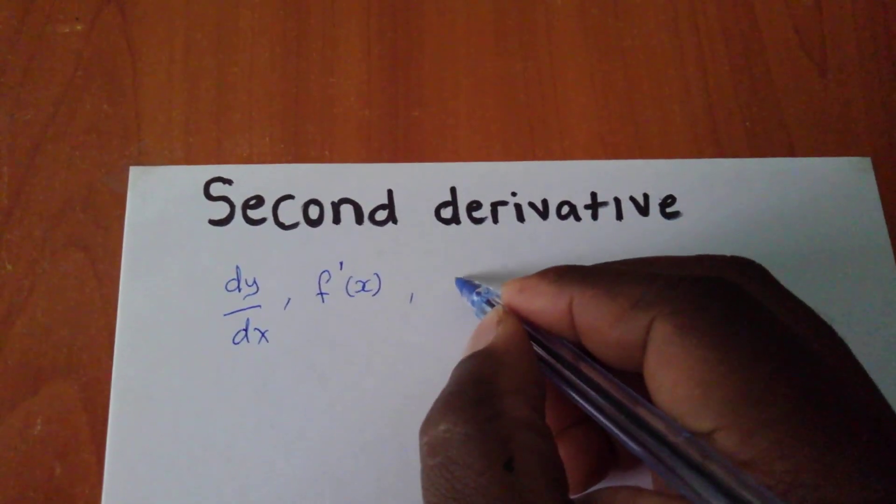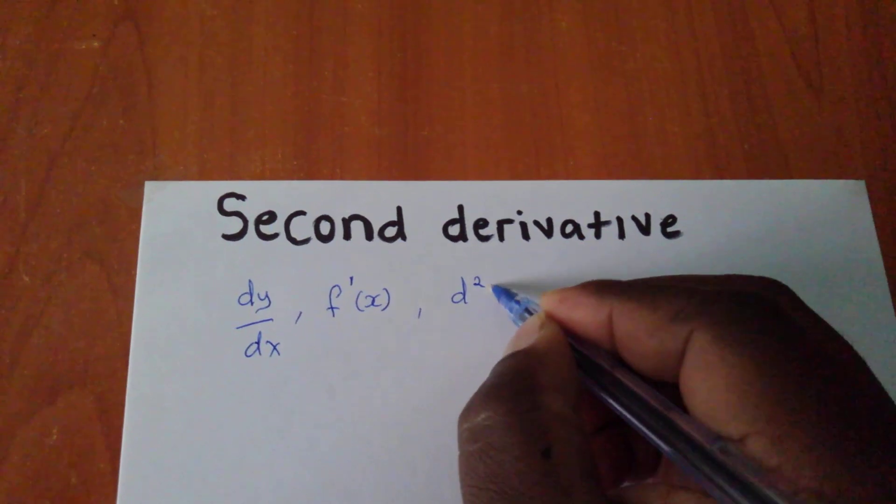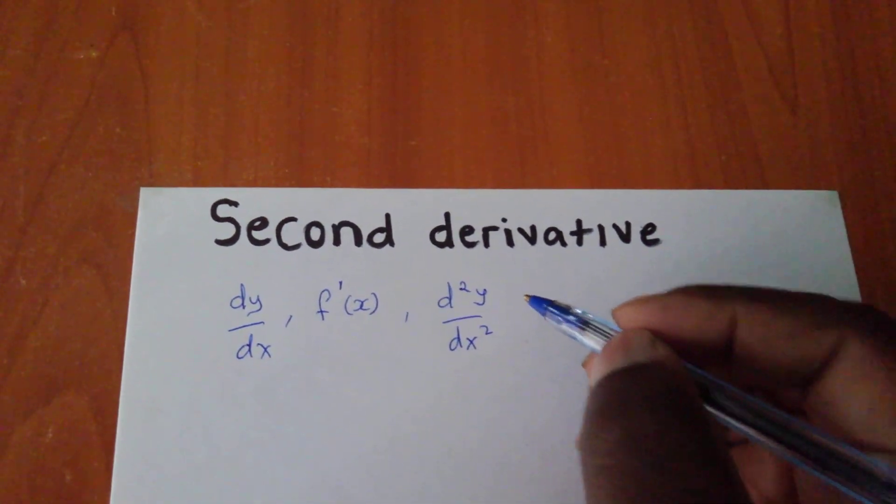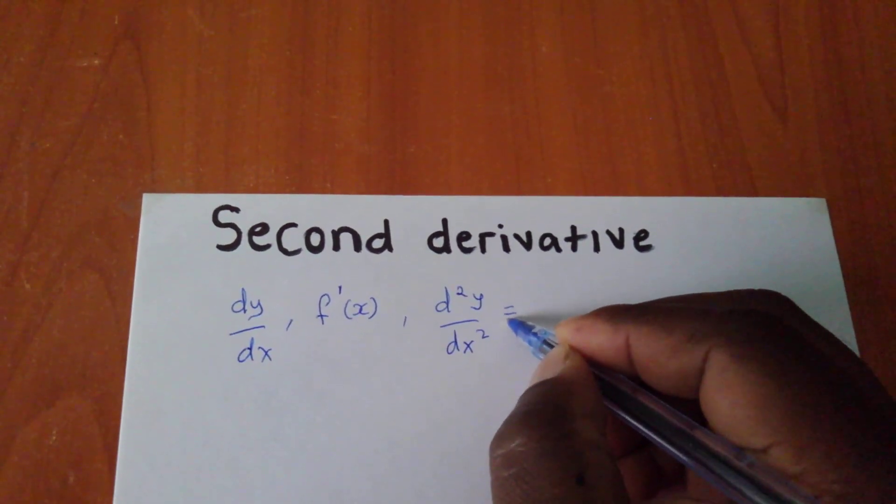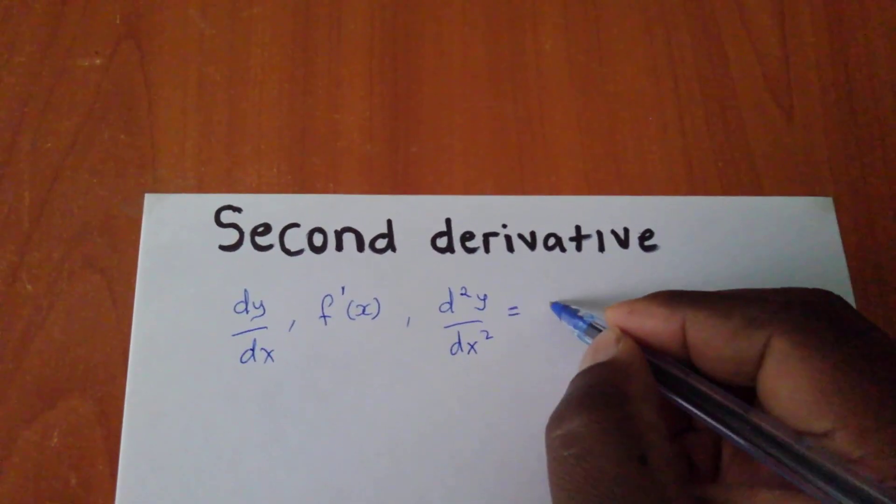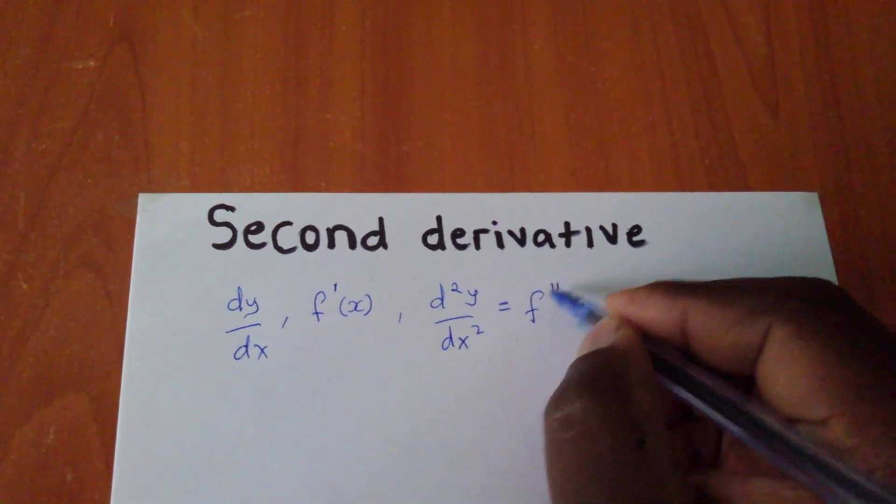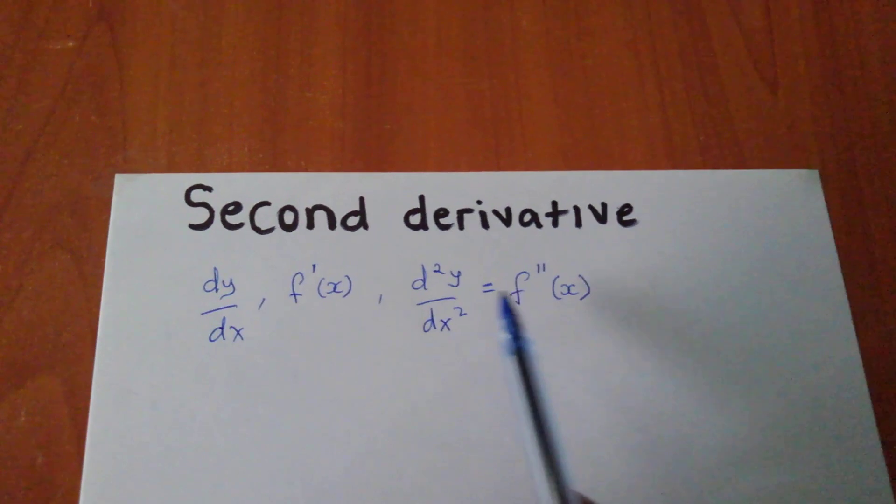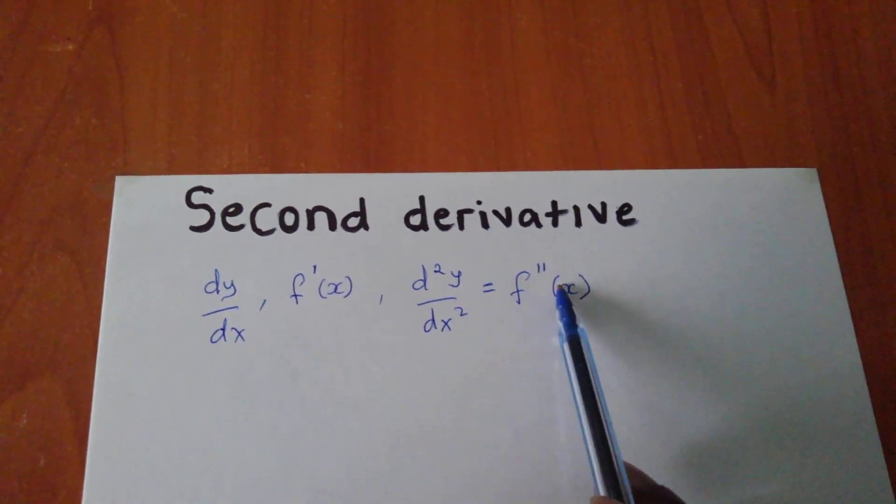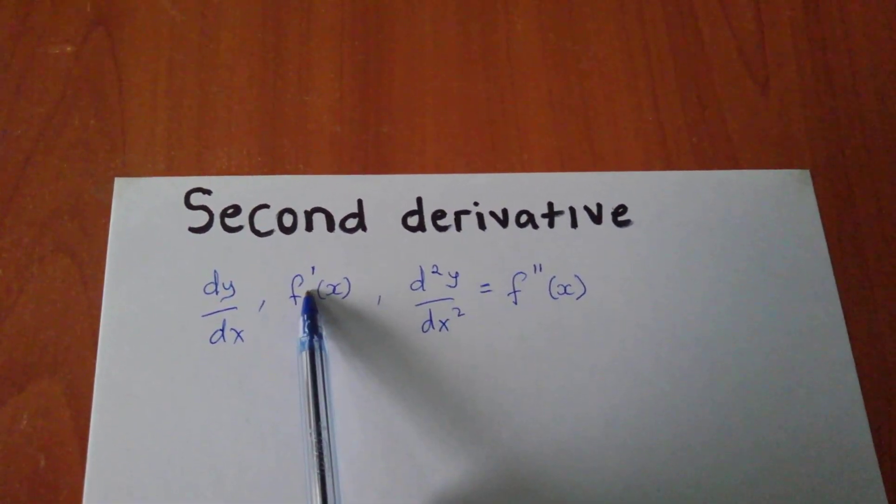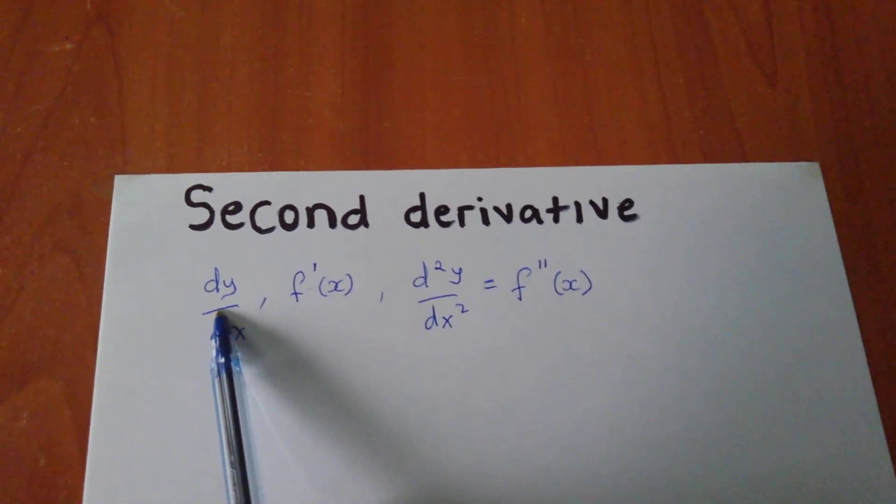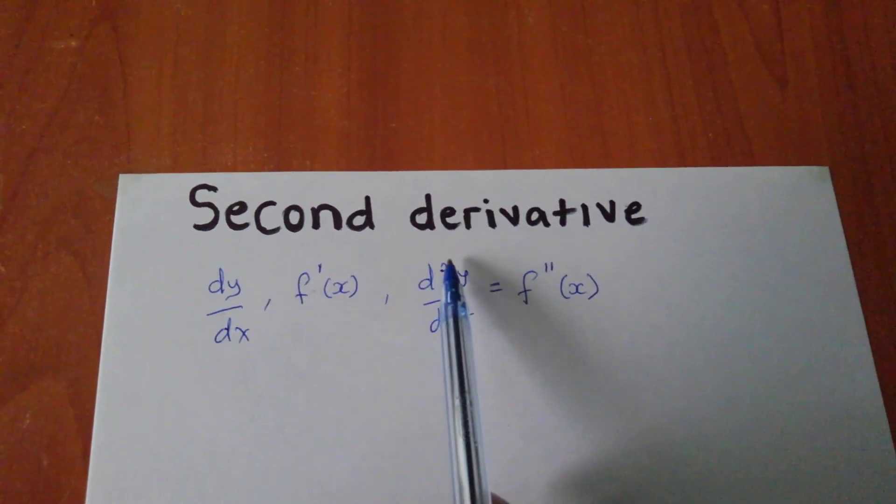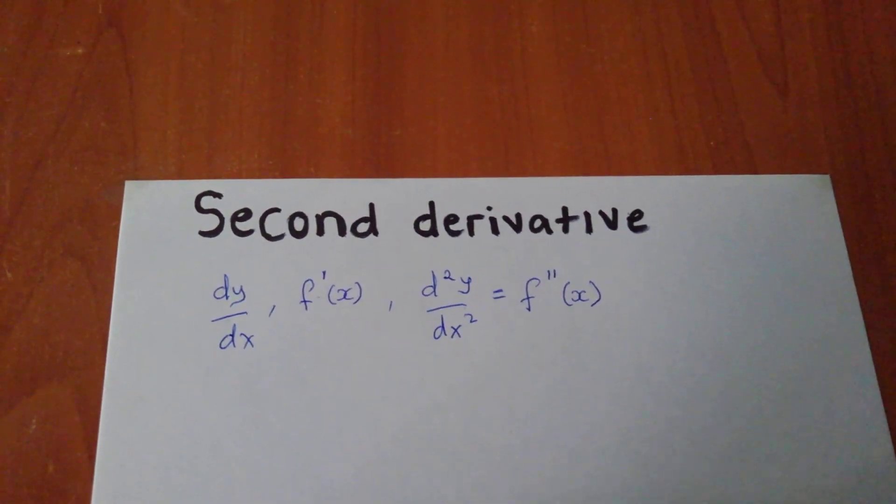Second derivative is given by d²y/dx², and one could write it as f''(x). So this is second derivative, this is also second derivative. This is the first differentiating, this is the second differentiating.